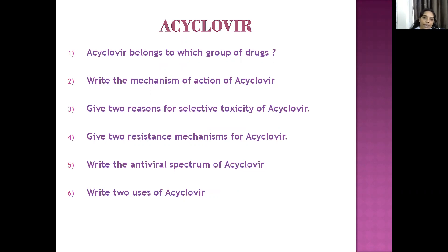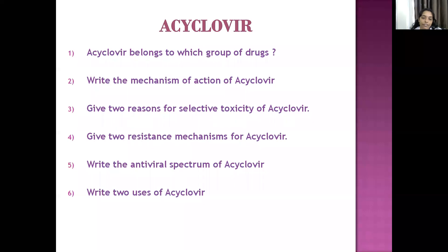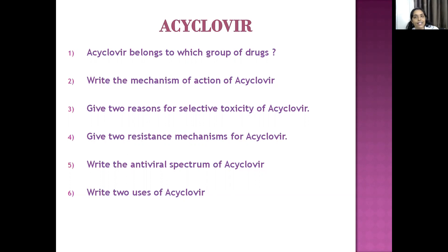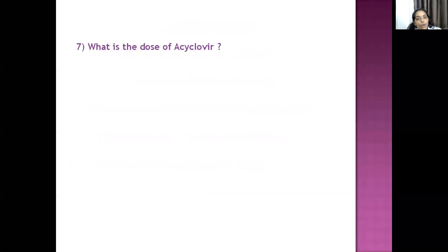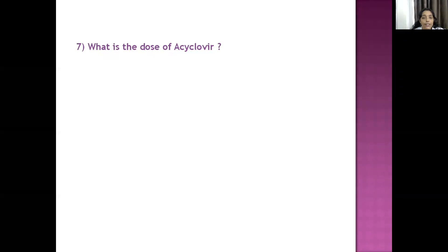Acyclovir is mainly used for herpes simplex virus infections and varicella zoster virus infections. The dose of acyclovir is 400 mg three times daily or 200 mg four to five times a day.